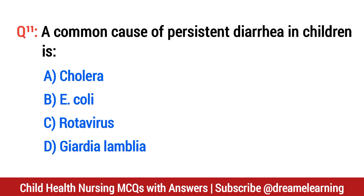Question number 11. A common cause of persistent diarrhea in children is? The right option is D: Giardia lamblia.